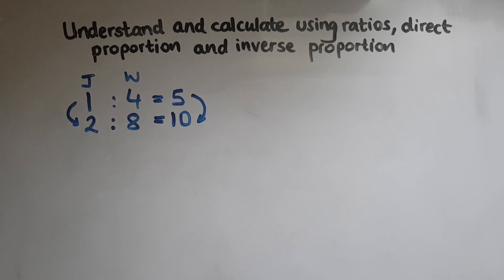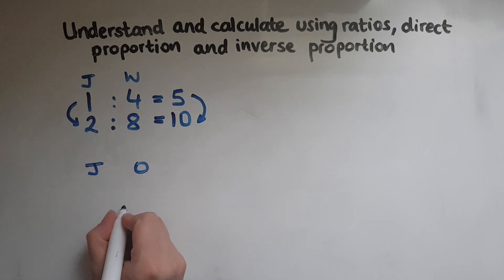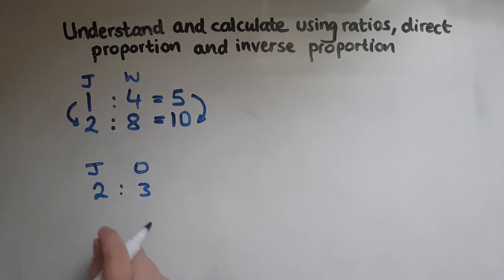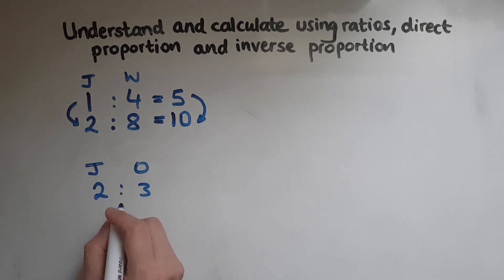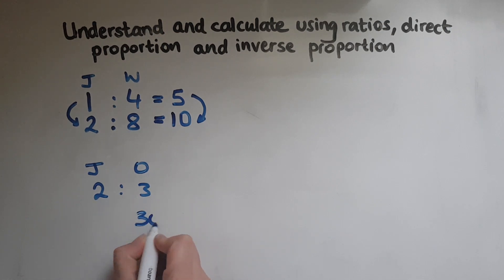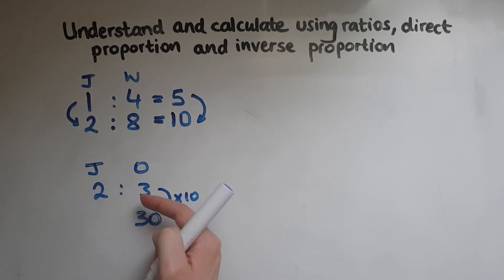Let's look at another question. Jake and Omar share money in the ratio two to three. So if Jake gets two pounds, Omar will get three pounds. How much money would Jake get if Omar got 30 pounds? We look at what's happened from three to get to 30 — we multiplied by ten.